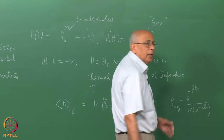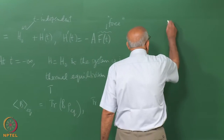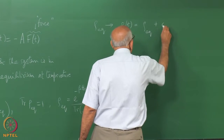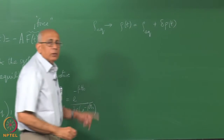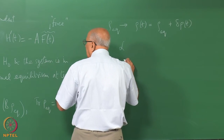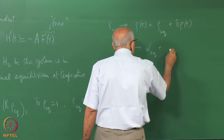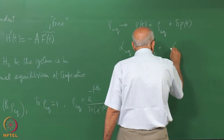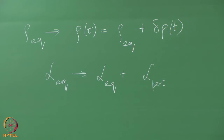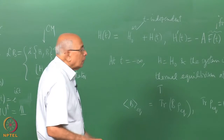The density matrix itself will change. The new density matrix will be ρ(t) = ρ_eq + δρ(t), correct to first order in the perturbation. Similarly, the Liouville operator L will go to L_eq + δL_perturbation, the extra portion coming from the H-prime part of the Hamiltonian. Again, L_perturbation will be first order.